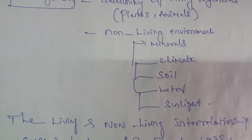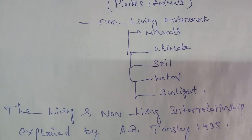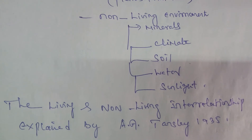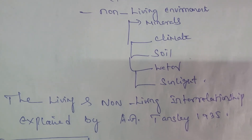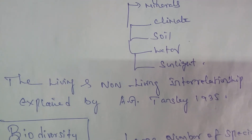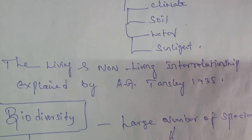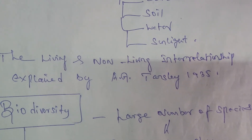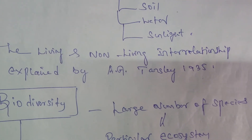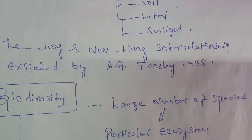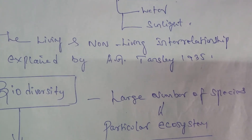And next, biodiversity — a large number of species occupies in the particular ecosystem, that is known as biodiversity. The term biodiversity was introduced by Walter Rosen, and defined by E.D. Wilson.